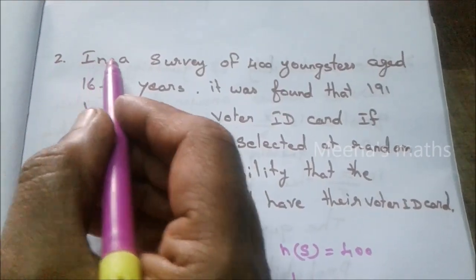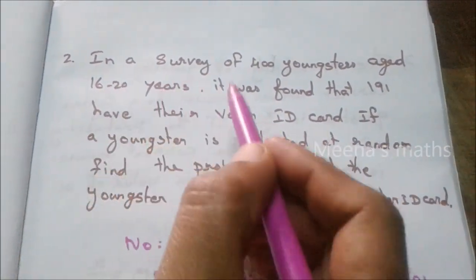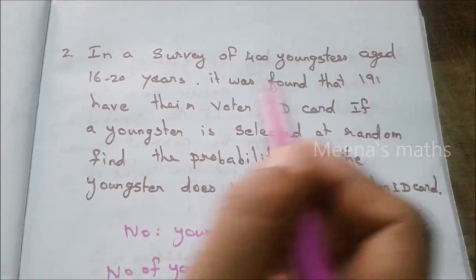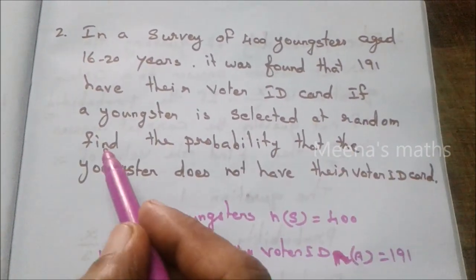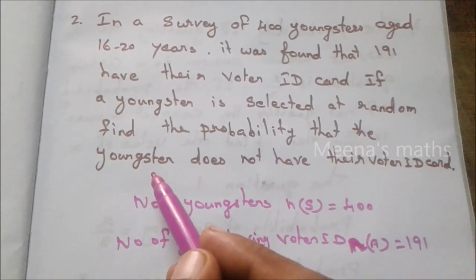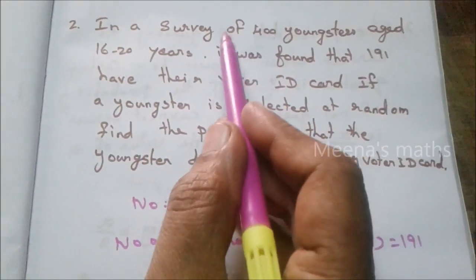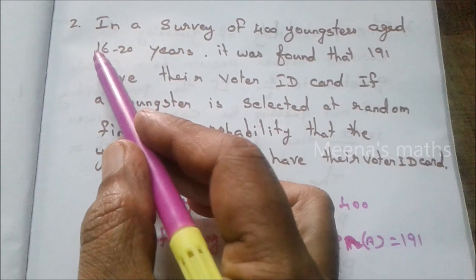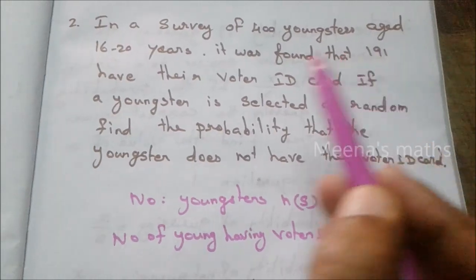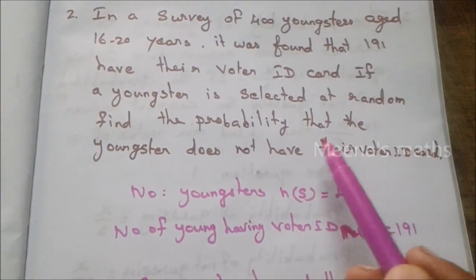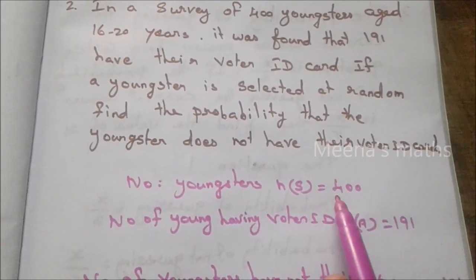Problem 2. In a survey of 400 youngsters aged 16 to 20 years, it was found that 191 have their voter's ID card. If a youngster is selected at random, find the probability that the youngster does not have their voter's ID card. Total N of S equals 400.